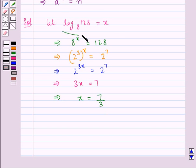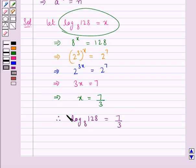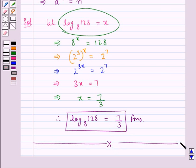And we had assumed x to be log of 128 to the base 8. Therefore we have log of 128 to the base 8 is equal to 7 upon 3. This is our final answer. This completes the session. Hope you have understood the solution of this question.